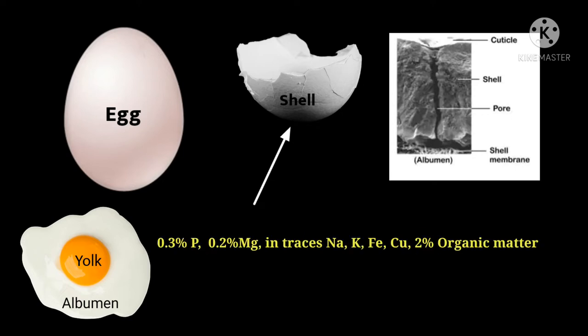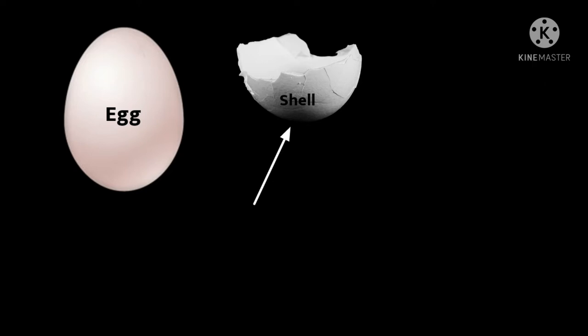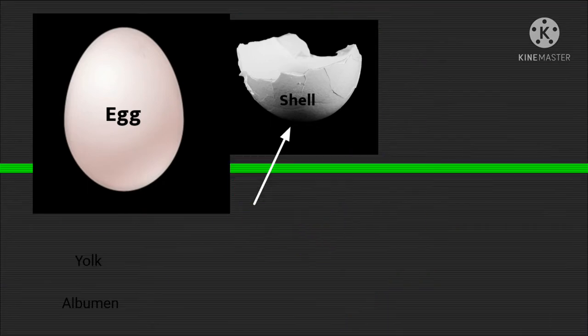Shell contains 0.3 percent of phosphorus, 0.2 percent magnesium, and in traces it contains sodium, potassium, iron, copper, and finally less than 2 percent organic matter, consisting of matrix proteins and shell pigments. It is very important to maintain eggshell quality to reduce number of cracked eggs or increase the number of saleable or hatching eggs and high number of viable day-old chicks.